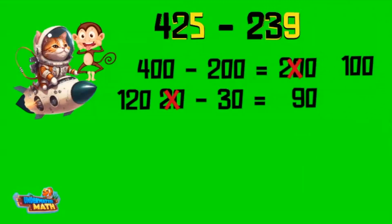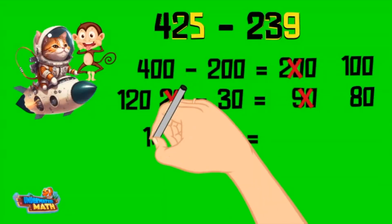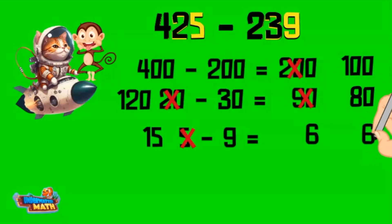I will take the ones place: 5 minus 9. I can't take 9 things away from 5, so I need to take 10 from the tens place and add it to the ones place. 10 plus 5 equals 15. 15 minus 9 equals 6. Then I add all the differences together to find the total difference. The answer is 186.